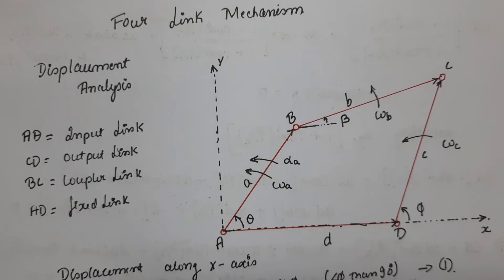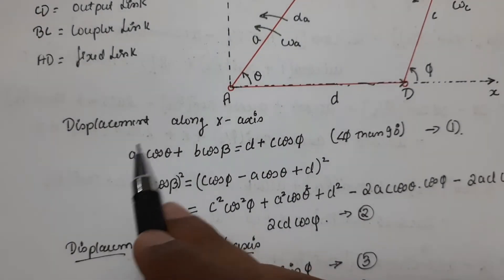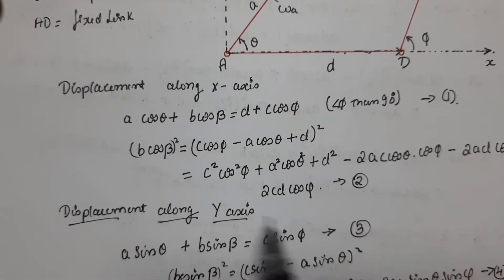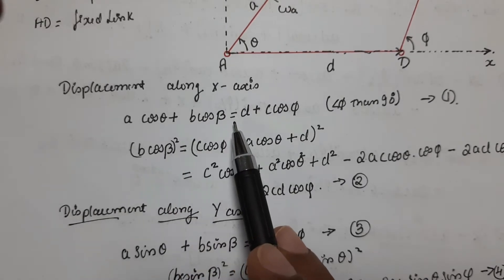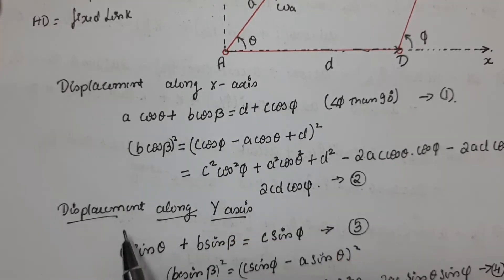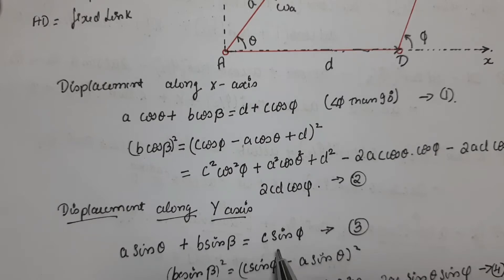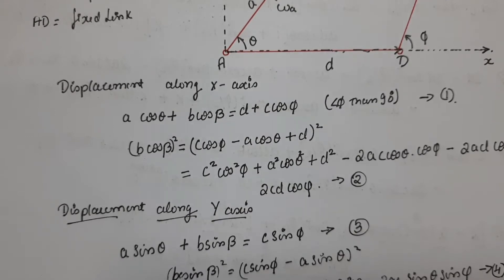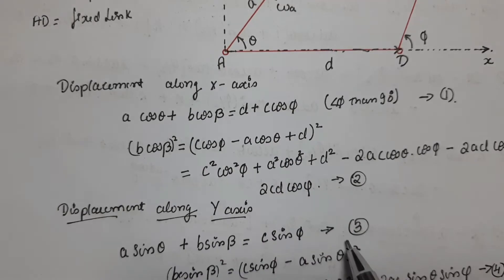To do this velocity analysis, let us consider the displacement equations: equation 1 along the x-axis, which is a·cosθ + b·cosβ = d + c·cosφ, and equation 3 along the y-axis, which is a·sinθ + b·sinβ = c·sinφ. Differentiating these displacement equations with respect to time will give us the velocity equations. To do that, we need to rewrite equation 1 and equation 3.